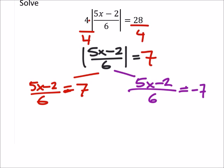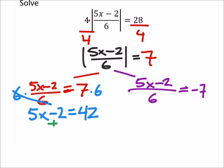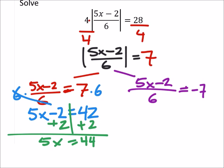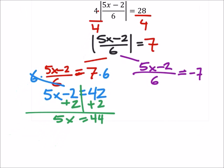I have denominators here, so I would just say multiply both sides by six, canceling out that six. Now I got 5x minus 2 equals 42. To solve this equation, I would add two to both sides, so I got 5x equals 44. Now divide both sides by five, and x equals 44 fifths. There's one solution.